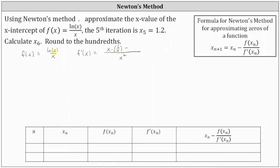Then minus the numerator, natural log x, times the derivative of the denominator — the derivative of x — which equals one. Simplifying, we have f′(x) equal to the quantity one minus natural log x, divided by x squared.